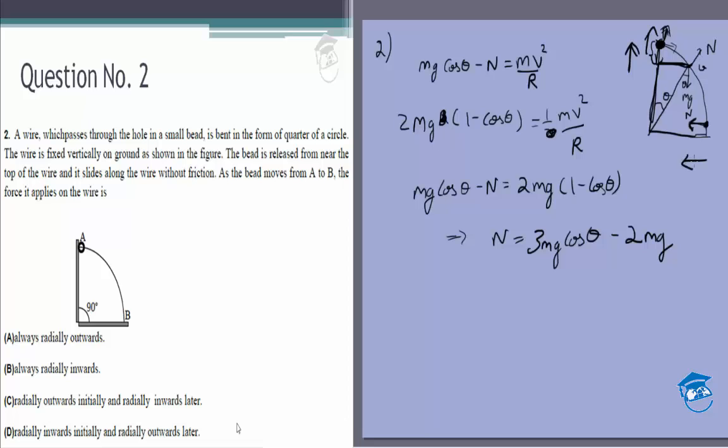Because remember what is asked in the question: the force which the bead applies on the wire. If the wire applies this force on the bead, then the bead applies this force on the wire. So on the wire it's radially inwards initially and radially outwards finally. So the answer is option D. Thank you.